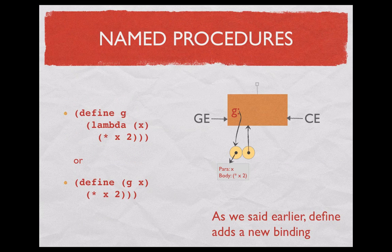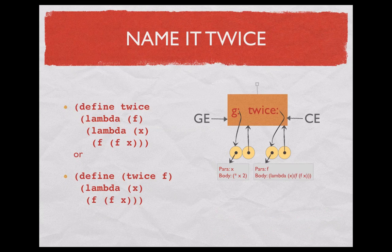Just like names that are bound to numbers, we can have names that are bound to procedures. The first procedure we defined earlier we can give the name g — that's shown as a pointer from g to the procedural object. That's binding, just like binding of a name to a number. We also define another name, twice, which is bound to the other procedure we just defined, in a similar manner.